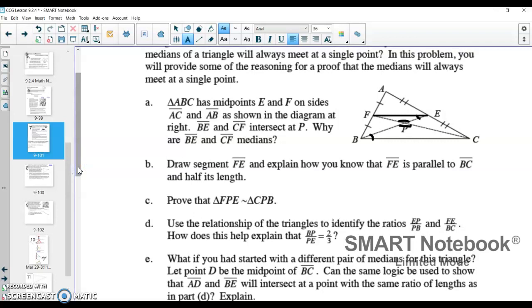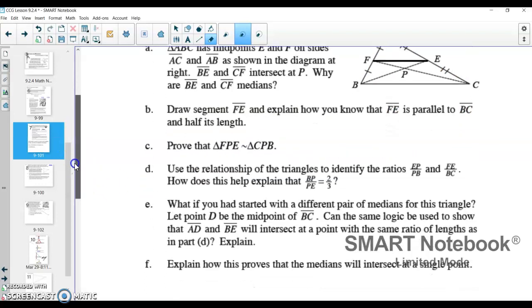All right, we're moving along then, so what we've done so far is we've said BE and FC are medians. We have drawn a mid-segment to say that FE and BC are parallel and that FE is half the length of BC, and we've just proven that this triangle FPE and CPB are similar.